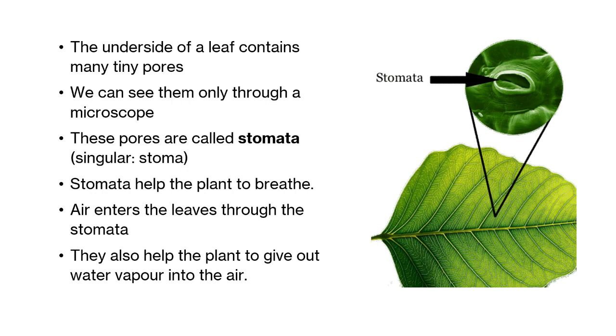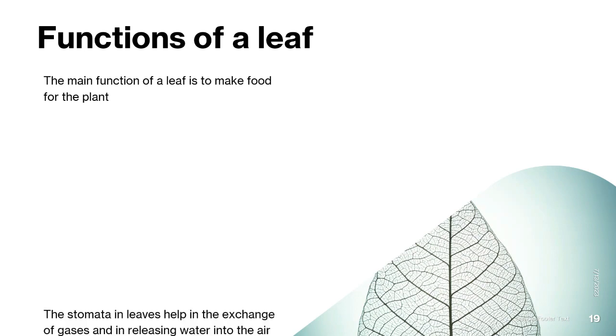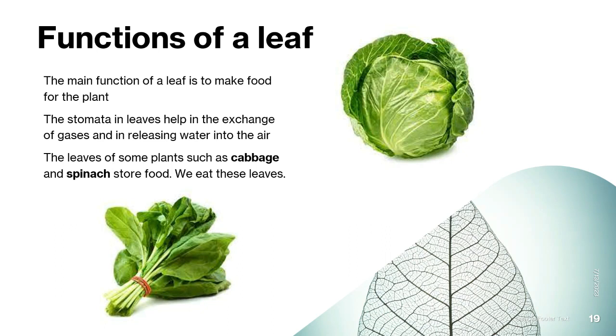So now let's discuss the functions of a leaf. The main function of a leaf is to make food for the plant. The stomata in leaves help in the exchange of gases and in releasing water into the air. The leaves of some plants such as cabbage and spinach store food. We eat these leaves.